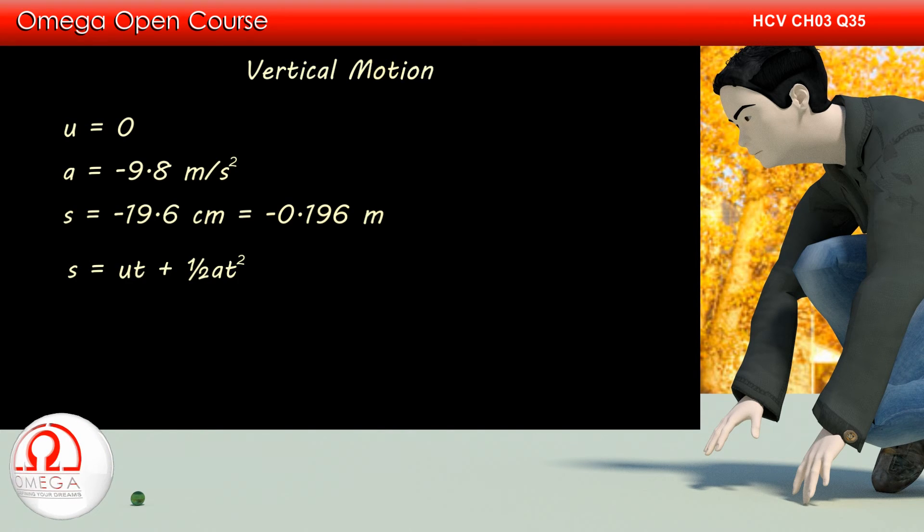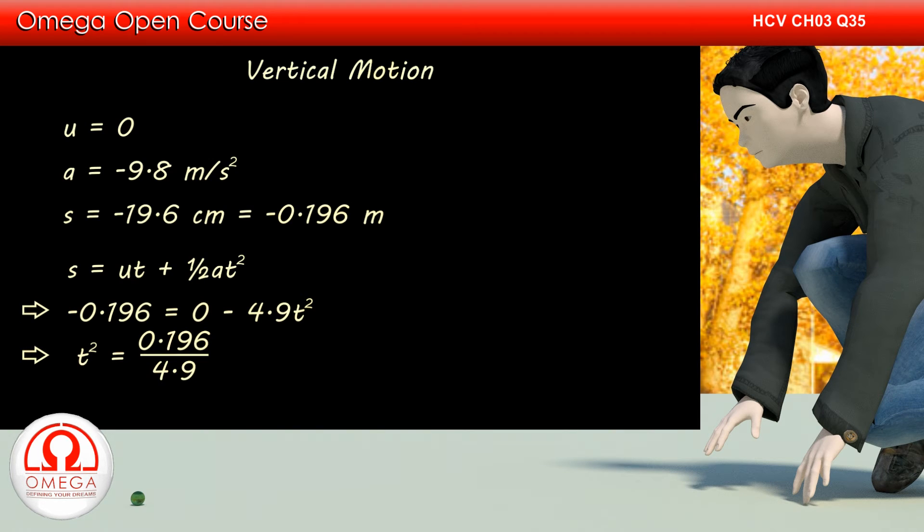From second equation of Newton's equation of motion, we have s equals ut plus half a t square. Putting the values, we get minus 0.196 equals 0 minus 4.9 t square. Simplifying, we get t square equals 0.196 by 4.9 or 0.04. This implies the time the goalie takes to hit the other goalie is 0.2 seconds.